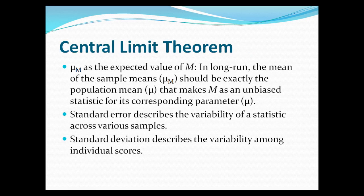μ sub m — where sub means subscript — is the expected value of the mean. The mean of the sample, μ sub m, should be exactly the population mean. This makes m an unbiased statistic for its corresponding parameter. So μ sub m is the mean of the sample means. If you theoretically pull all different samples from the population, μ sub m is the mean of those sample means, and across samples it should equal exactly the population mean — making m an unbiased statistic for the parameter.